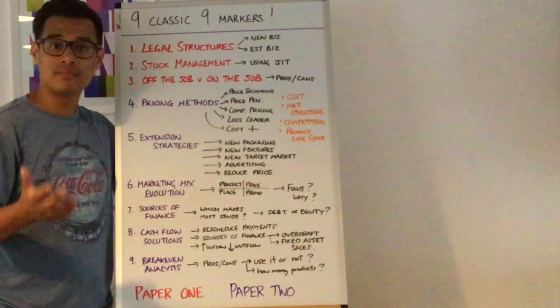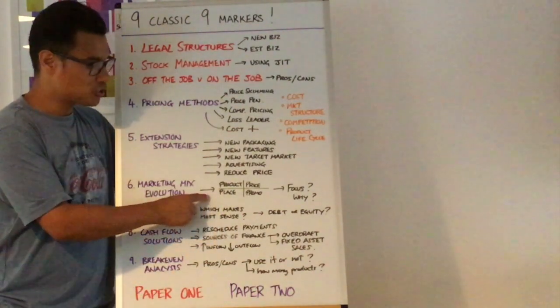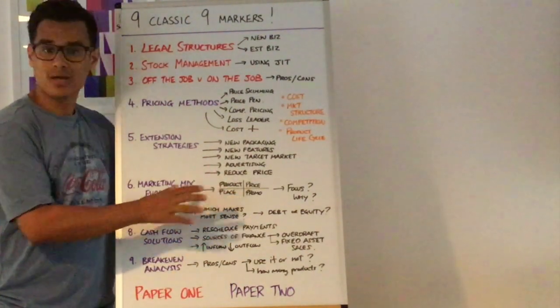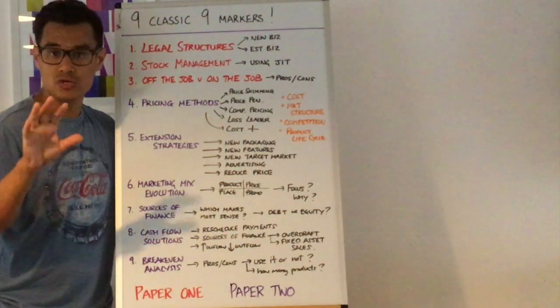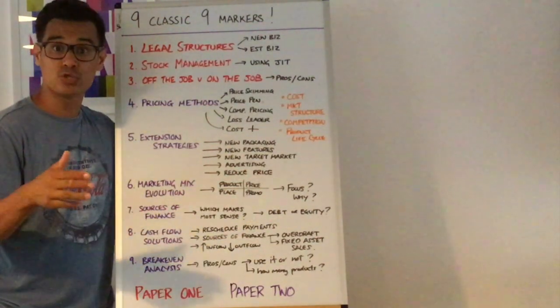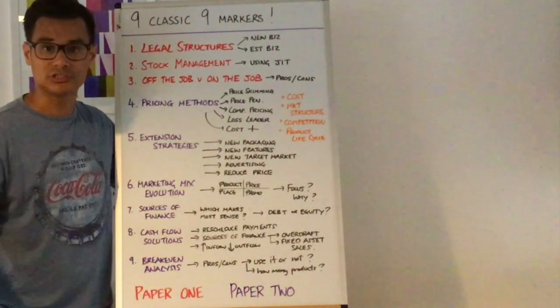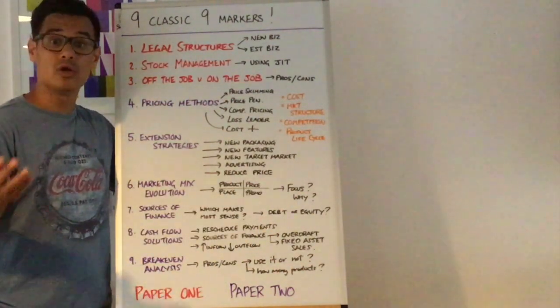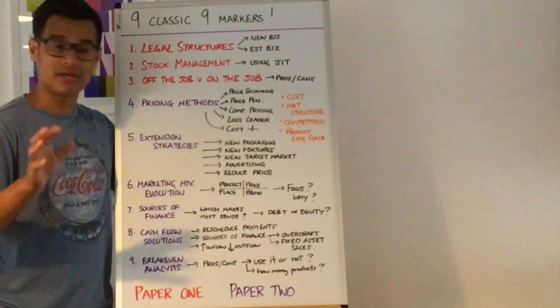Number six, marketing mix evolution. What I mean by this is it will be a question where maybe they've got some sort of setup so their product, price, promotion, place they're using it quite evenly, maybe they need to focus on one more than the other three now, maybe focus on price for example and it will be about you recommending how the business should move with their marketing mix combination.